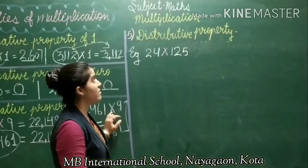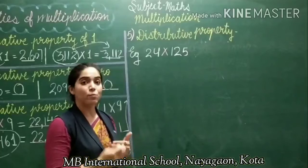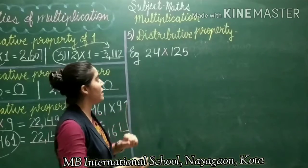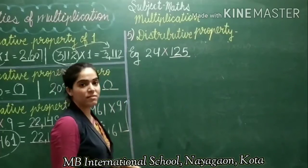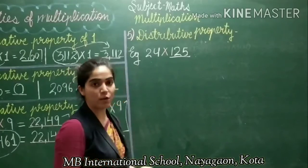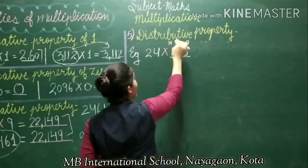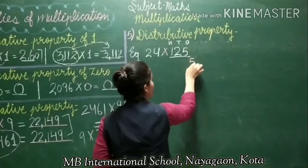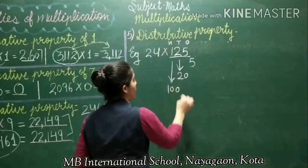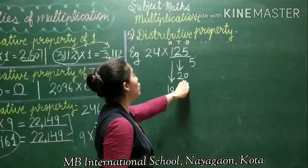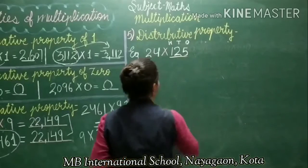The next and last property is distributive property. What does this property say? We have 2 numbers to multiply, and we have to expand the bigger number into smaller numbers. Here the bigger number is 125. We have to break this number into smaller numbers using expanded form — breaking the number by place value. 5 is at the ones place, so it breaks into 5. 2 is at the tens place, so it breaks into 20. 1 is at the hundreds place, so it breaks into 100. So the expanded form of 125 is 100 + 20 + 5.